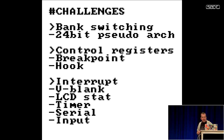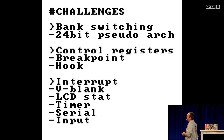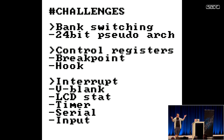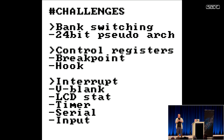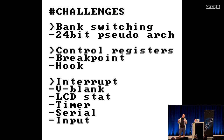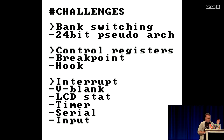We started doing this and encountered mainly three challenges. First, the bank switching issue: in most programs each piece of the program has a unique address, but with the Game Boy's bank switching, the same address can refer to completely different parts of memory depending on which bank is loaded. We solved this by extending the architecture — instead of using 16-bit addresses, we created a fake register that tracked which bank was loaded, and pretended everything used 24-bit addresses with some tweaking. That was no problem.